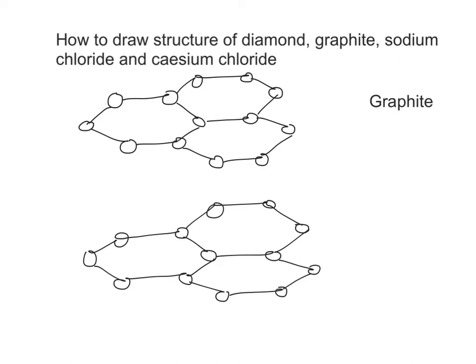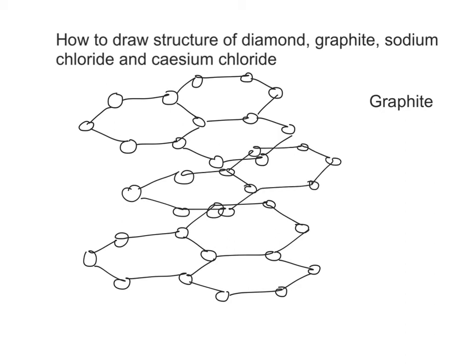Then we shift the second layer a little bit to the right, starting by placing this carbon a little bit to the right in this position, and repeat what we drew for the first layer.